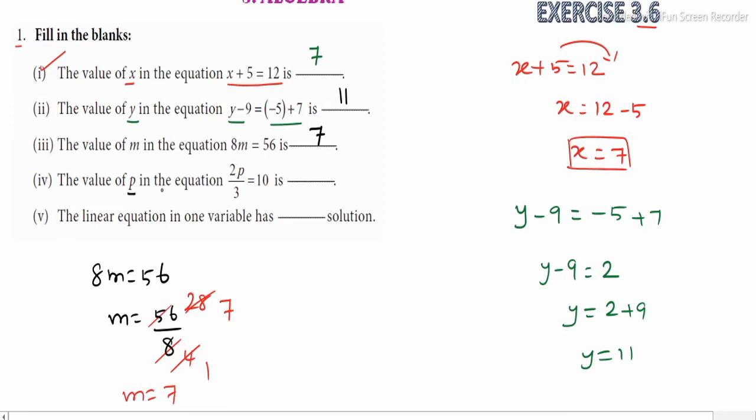The value of p in the equation 2p divided by 3 equals 10. So 2p divided by 3 equals 10. Now we can isolate p here. On the right side it will be 10 into 3. On the right side it will be divided by 2. So if we have multiples we can cancel this.